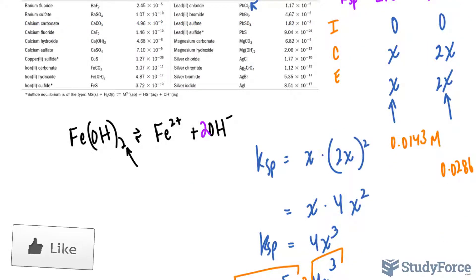Now that we have our balanced chemical equation, we can create an ice table, just like how we did in question one. And since this is a solid, we don't worry about any of that information for our equilibrium expression. But over here, this is aqueous, and that's aqueous.